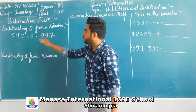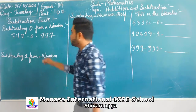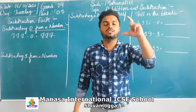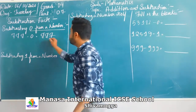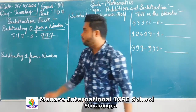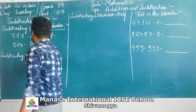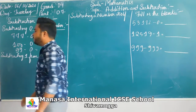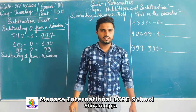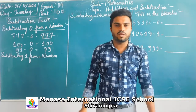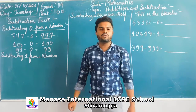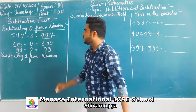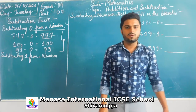The first property is subtracting zero from a number. When you subtract zero from any number, you will get the same answer. For example, 100 minus 0 equals 100, and 99 minus 0 equals 99. So subtracting zero from any number gives you the same number.